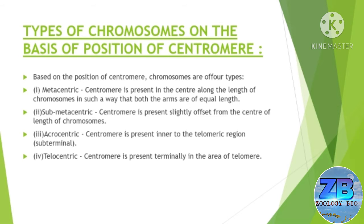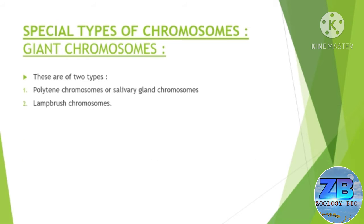Now let's talk about some special types of chromosomes — giant chromosomes. There are two types: polytenic chromosomes, also called salivary gland chromosomes, and the second one is lampbrush chromosomes.